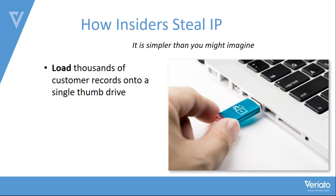With a thumb drive, employees can download anything they want. Snowden took thumb drives in and took 1.7 million records out. When I was in law enforcement, discovery used to fill floors full of boxes. Now all that can fit on the thumb drive in the picture. That's one way they easily get information out, and it's hard to detect — we don't see that in a person's pocket.